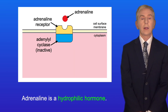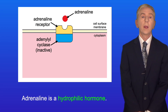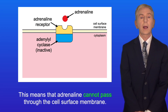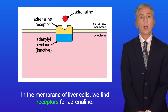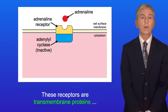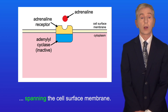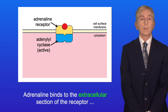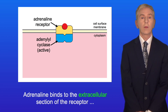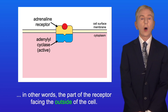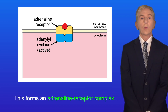Now adrenaline is a hydrophilic hormone. This means that adrenaline cannot pass through the cell surface membrane. In the membrane of liver cells we find receptors for adrenaline. These receptors are transmembrane proteins spanning the cell surface membrane. Adrenaline binds to the extracellular section of the receptor — in other words, the part of the receptor facing the outside of the cell — forming an adrenaline receptor complex.